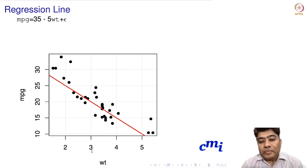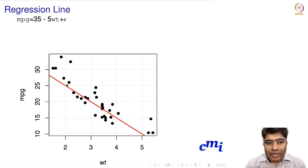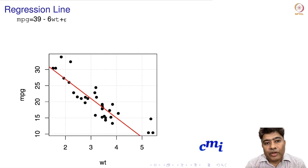When it comes to estimation of beta, let's understand how the values of beta affect my model. Take this line: beta naught as 35 and beta 1 is minus 5, so my model is mpg equals 35 minus 5 times weight plus epsilon. Now if I change it to 39 and minus 6, the model also changes.